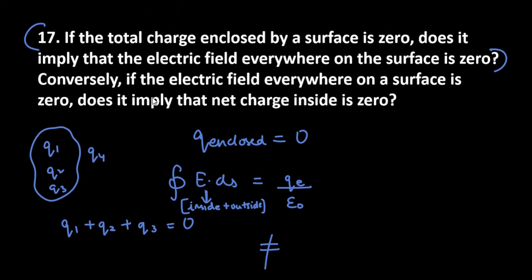Now the second case: they are saying if the electric field on Gaussian surface is zero, will our q be zero? So here, if our electric field is zero, then net charge will also be zero, because electric field was due to what?